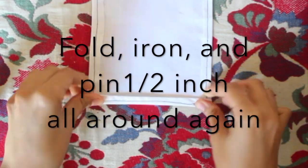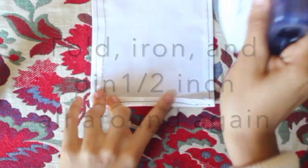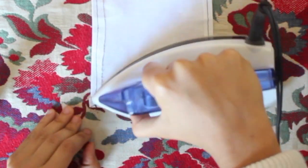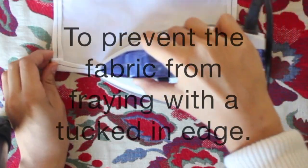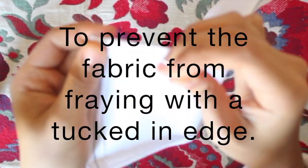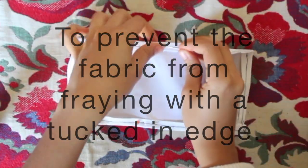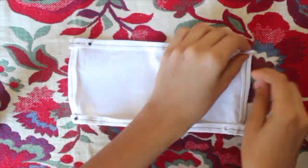Again, iron and pin half an inch all around the perimeter to prevent the fabric from fraying with a neat tucked in edge. Sew all around.